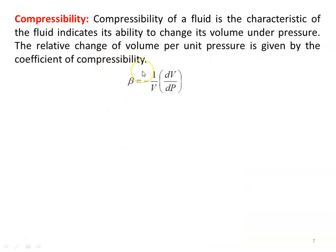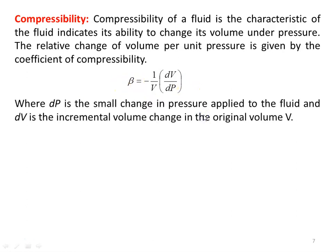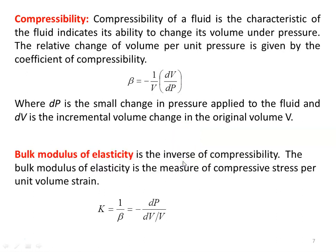Compressibility — this is compressible fluid flow, gas dynamics. Compressibility of the fluid is a characteristic that indicates its ability to change its volume under pressure. The relative change of volume per unit pressure is given by the coefficient of compressibility: beta equals minus 1/V times dV/dP, where dP is a small change in pressure applied to the fluid and dV is the incremental volume change. We also define the bulk modulus of elasticity, which is the inverse of compressibility: k equals 1/beta equals minus dP divided by (dV/V), where dV/V is the volume strain and dP is the compressive stress.